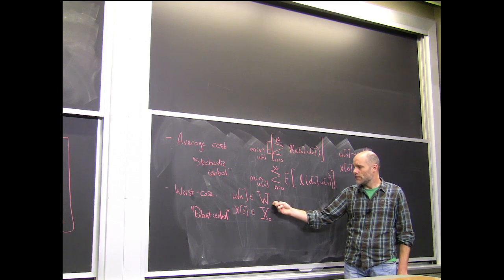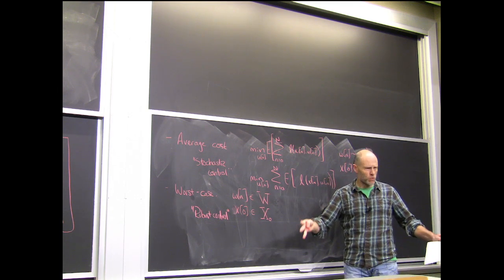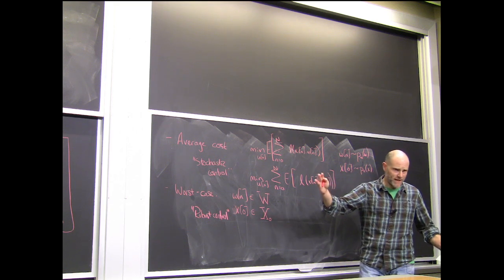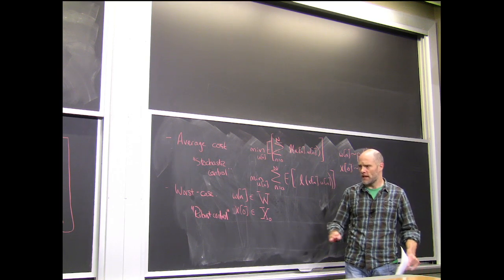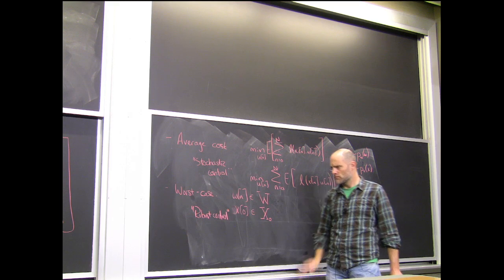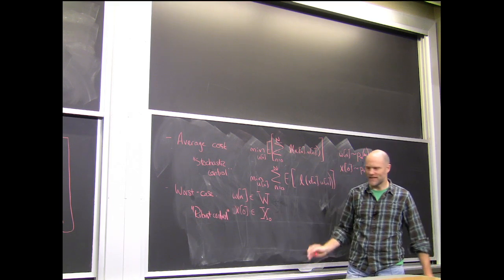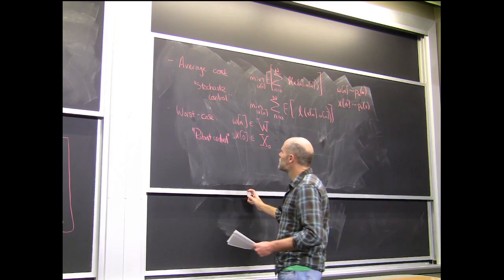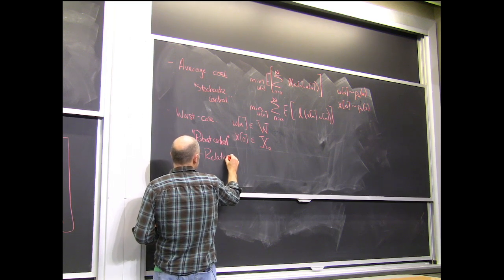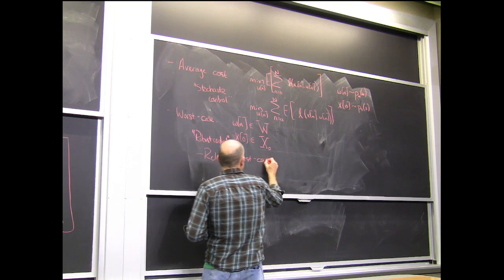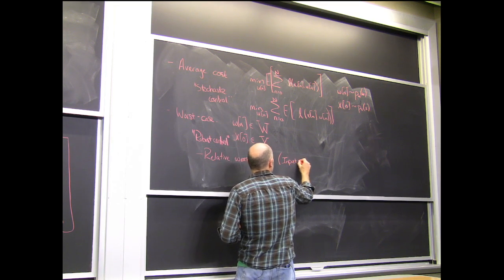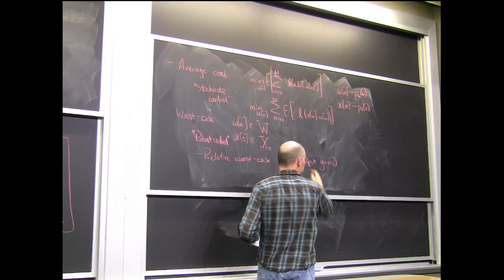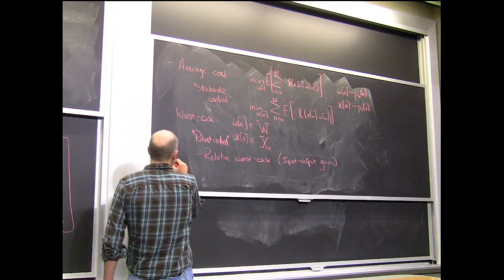Even in the robust control case, it's not always probability-one statements. There's also input-output gains — saying the input to output gain is guaranteed to be under some value, even if performance is stochastic. There are also ideas from operations research like value at risk and conditional value at risk, which focus on what you can say about the tails of the distribution. We're also seeing formulations using the notion of regret, re-popularized in online optimization and machine learning — bounding your performance relative to some reasonable policy.